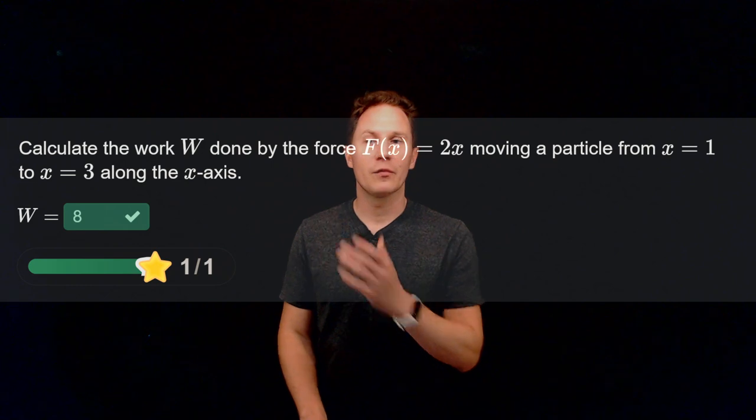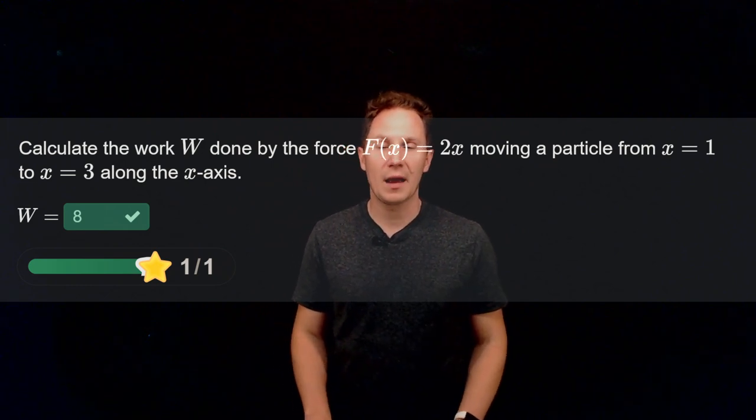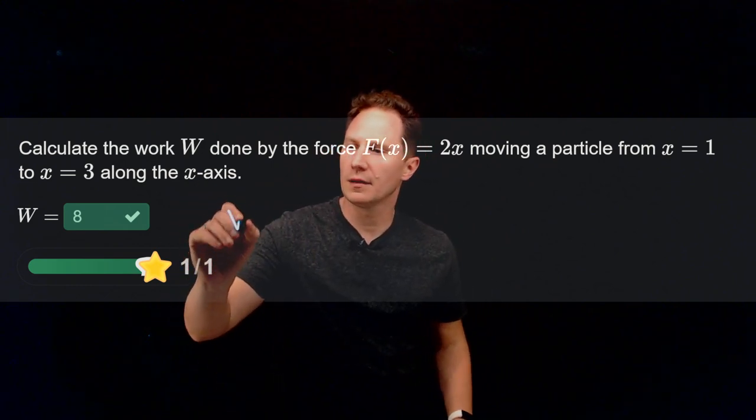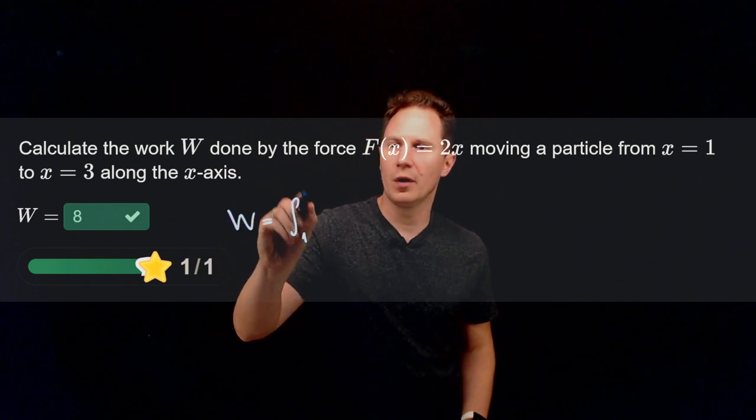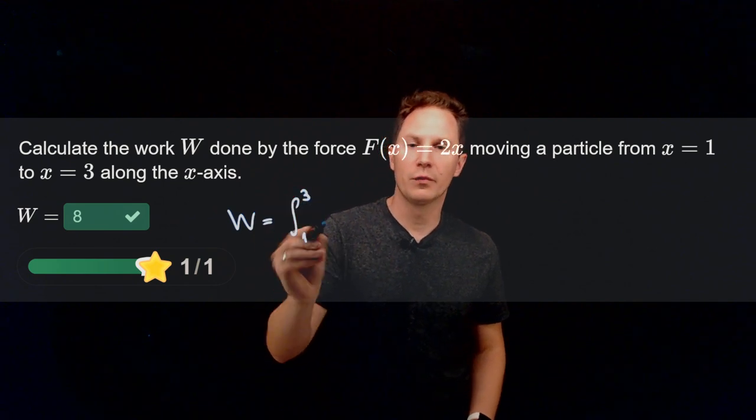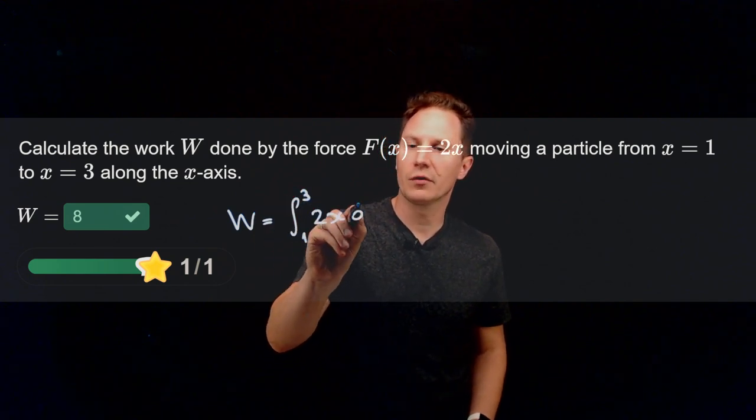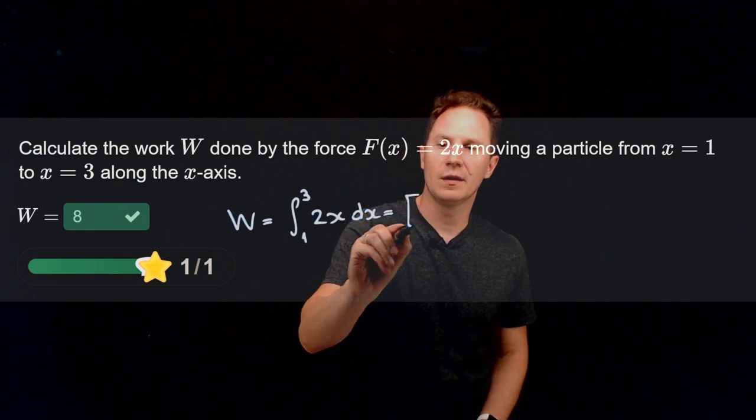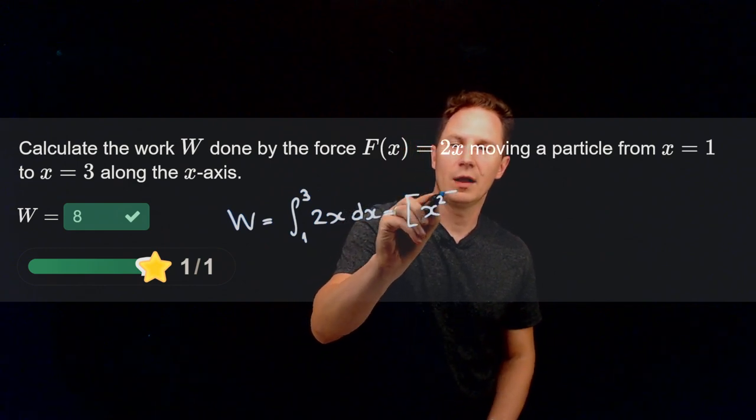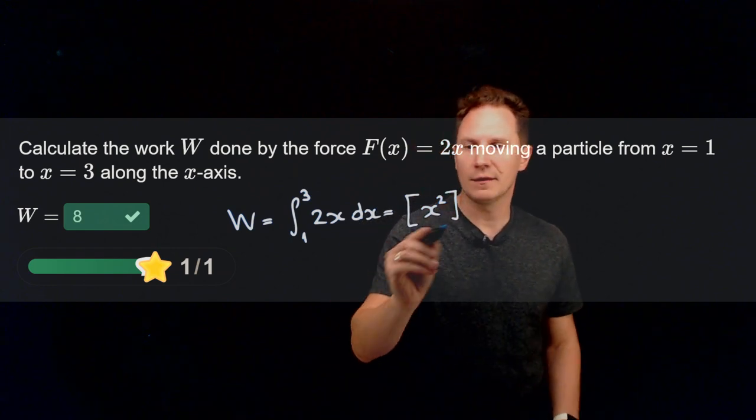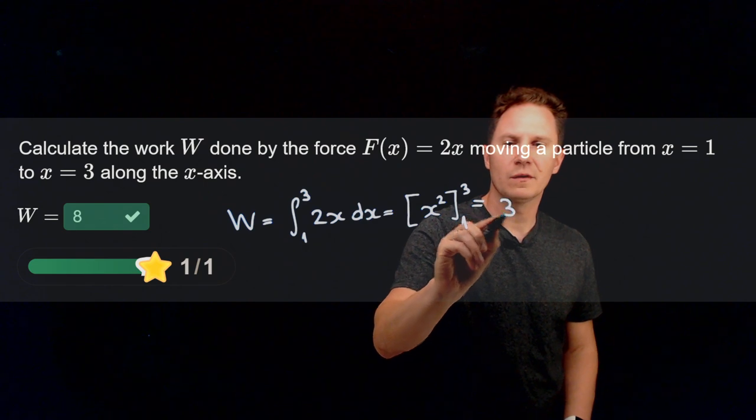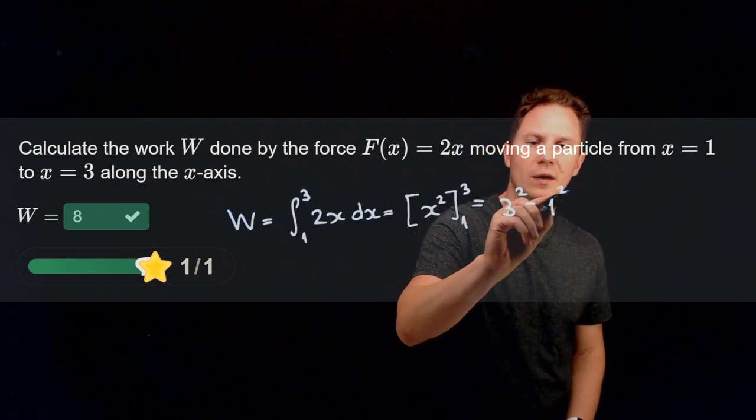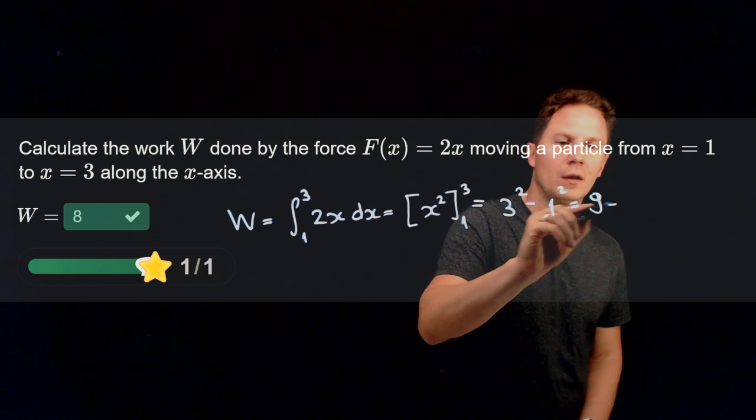Hope you paused it and have found this value to be 8. So we can find the work by taking the definite integral from x equals 1 to x equals 3 of the force that is now 2x dx. And this is simply the change in values of x squared, the antiderivative as x goes from 1 to 3, so that is 3 squared minus 1 squared, 9 minus 1, that is 8.